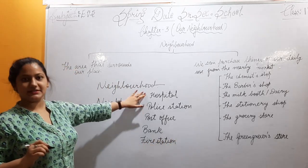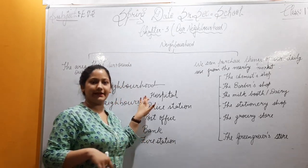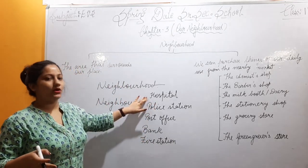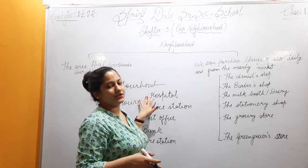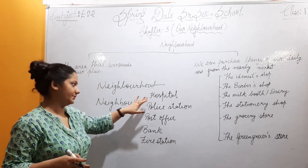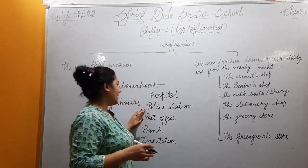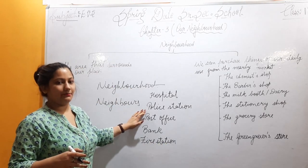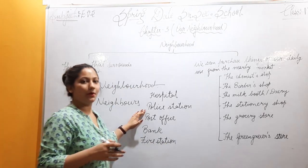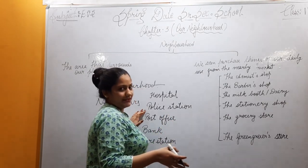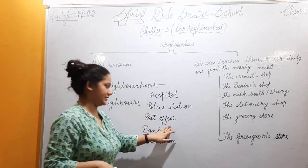Our first topic is the hospital. Nowadays, especially during COVID-19, when you become sick and have fever or a cold, where will you go? The hospital. In the hospital they have doctors, nurses, and other staff to help you. The second one is the police station — when you are facing a problem such as robbery or other emergencies, you have to go to the police station.